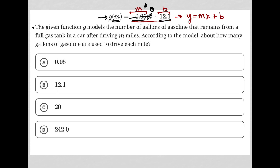That tells us that the car initially has 12.1 gallons of gasoline. And then every mile that it drives, it loses, so when m is 1, it's going to lose 0.05, or we're going to have negative 0.05 subtracted away from that 12.1. So the question asks about how many gallons of gasoline are used to drive each mile. It is the slope, and it's going to be 0.05, which is choice A.